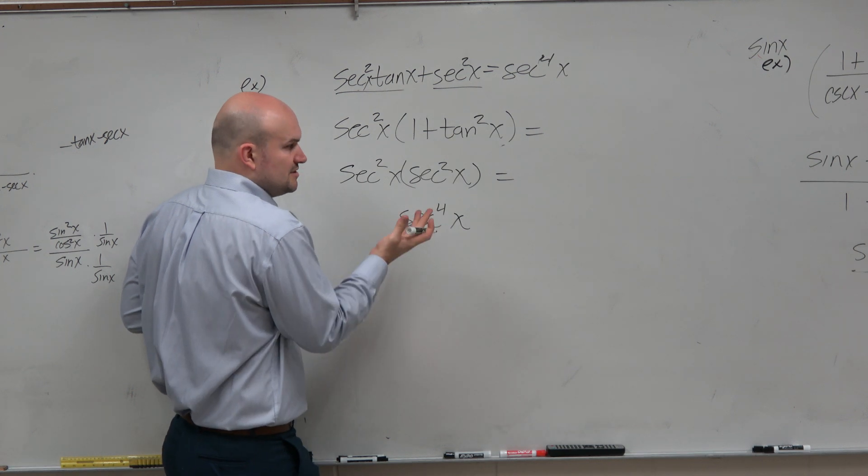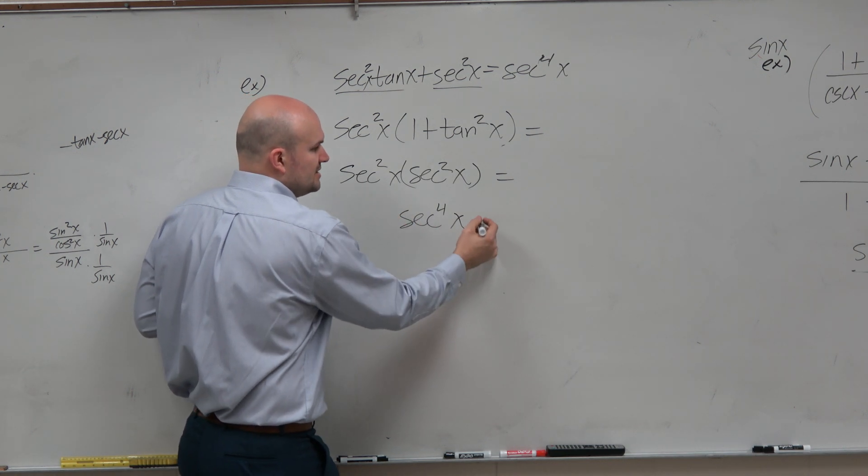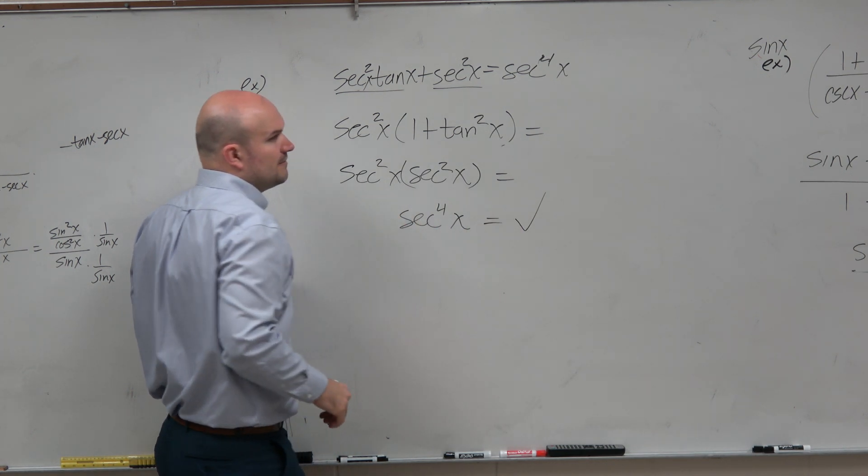x squared times x squared is x to the fourth. Secant squared times secant squared is secant to the fourth.